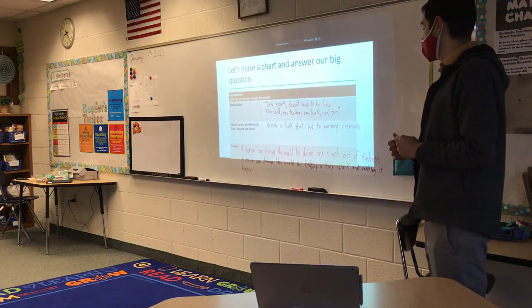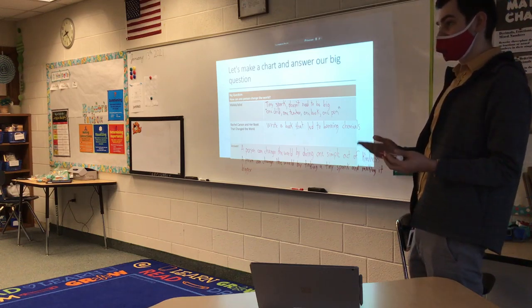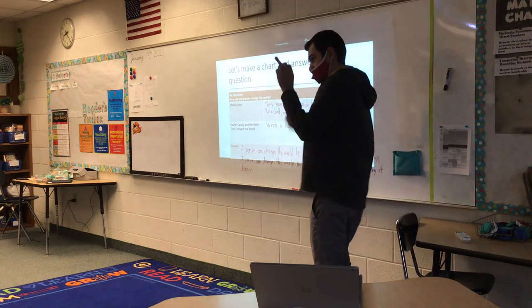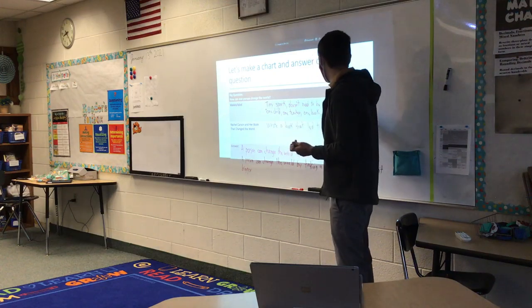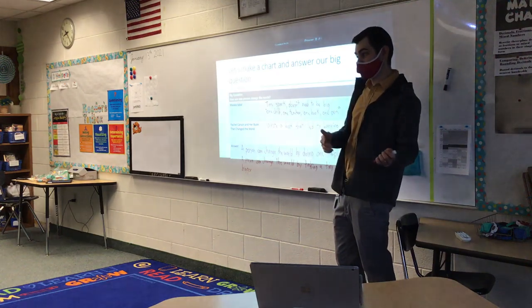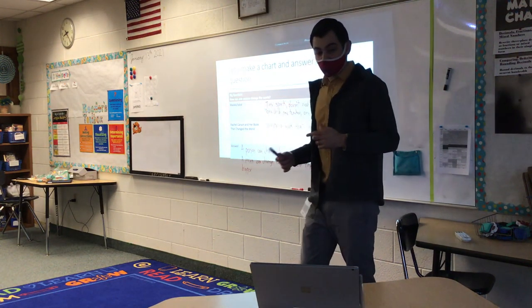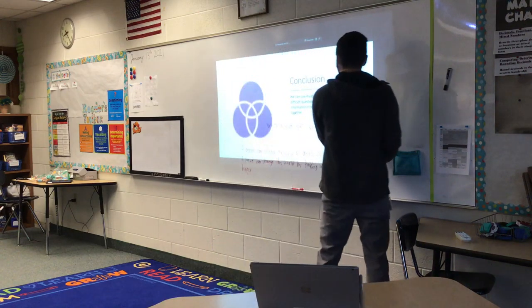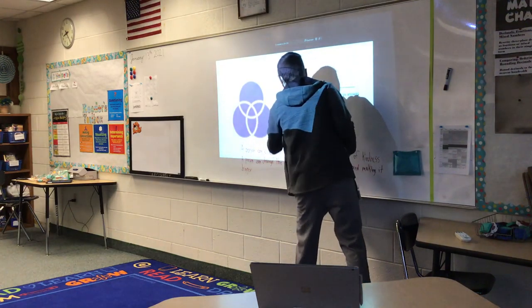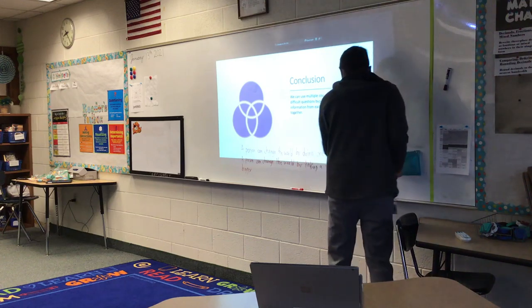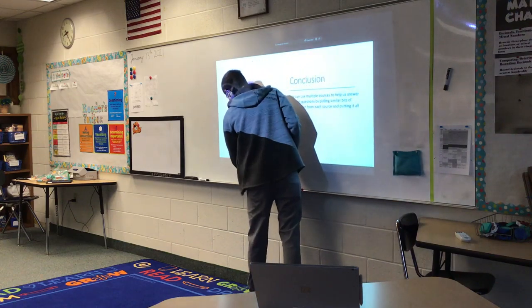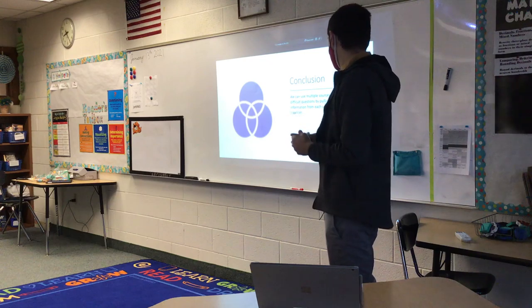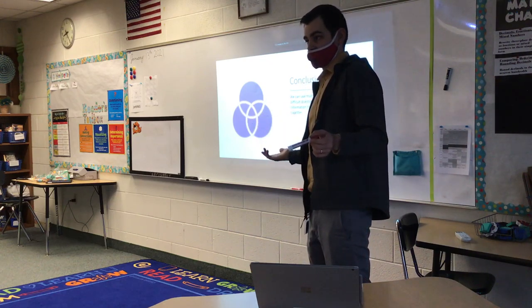Those are some good answers. You notice how you can actually answer this question in multiple ways and it can still be considered right — that's because it's a big question, which means there are different interpretations and they can still be correct. There were even some answers you had that would have been right; you just didn't have the facts or the evidence behind what we just read. If you had found different books, you could use that evidence to get your answer. As we can see, there are lots of different ways to answer that question. Our conclusion is that we can use multiple sources to help us answer difficult questions by pulling similar bits of information from each source and putting it all together — isn't that exactly what you did with your persuasive essays? You found a bunch of little bits of information with similarities and put it all together to create an answer to a difficult question.